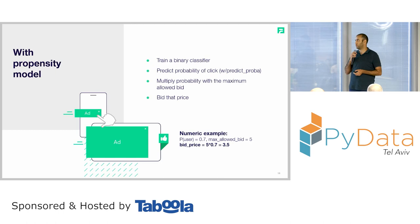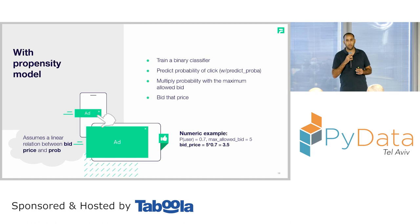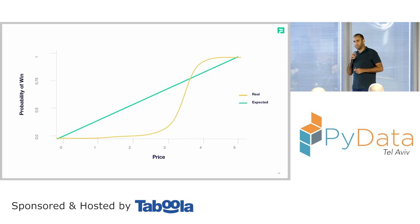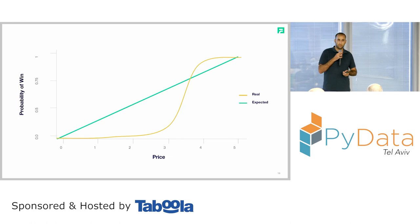However, there is something that bothers with this method: it assumes a linear relationship between the bid price and the probability of winning. This graph presents this phenomenon — as long as we increase the price, we expect the probability of winning to increase at a linear rate.